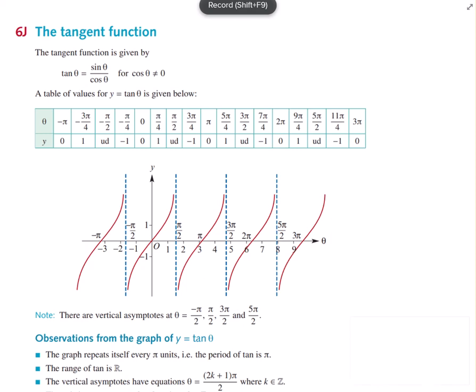So the function tangent. To sketch a graph of tan, the thing you want to remember always is that the period is not like sine and cos. The period for sine and cos is 2π. The period for tan is π, and you always have asymptotes — if there's no shift — at π/2 and -π/2. If you mark those in, you can see the period between those is π.